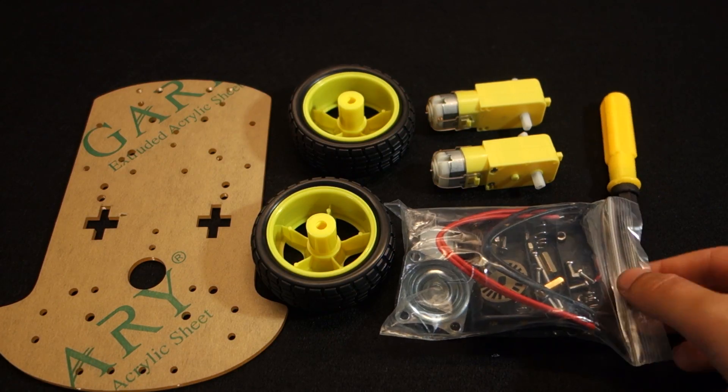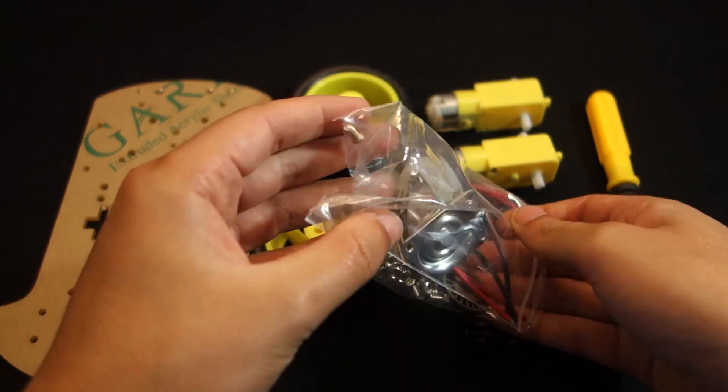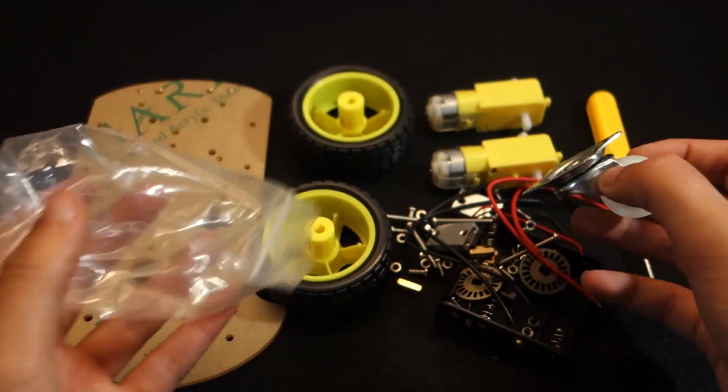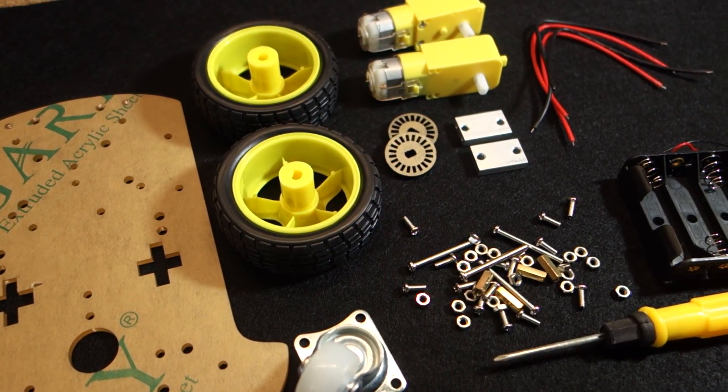There is also a small plastic bag that comes with a battery holder that you won't need for this project, a small wheel for the front, some bolts and screws, 4 wires and other required components to assemble the robot.